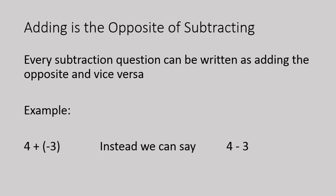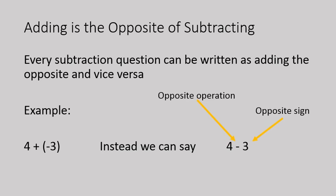Let me show you some examples. Four plus negative three is an addition question — you're adding a negative number. Instead, you can write that as four minus three. You are subtracting positive three instead of adding negative three. So you can change the operation and change the sign for addition and subtraction.